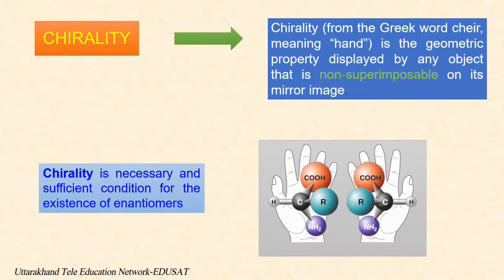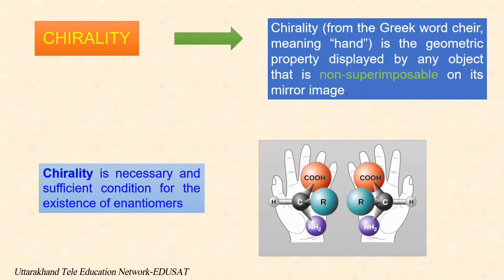The term chiral was first introduced by Kelvin in 1884 for those objects which have handedness — that is, the object and mirror image relationship of a left and right hand. The term chiral is used to describe molecules of enantiomers because they are related the same way as a right hand is related to a left hand. Objects or molecules which are not superimposable on their mirror image are chiral and are said to possess chirality. Chirality is a necessary and sufficient condition for the existence of enantiomers. All optically active compounds have chiral molecules, and compounds exhibit enantiomerism only when their molecules are chiral. Chirality is the essential criterion for optical activity as well as for enantiomerism.